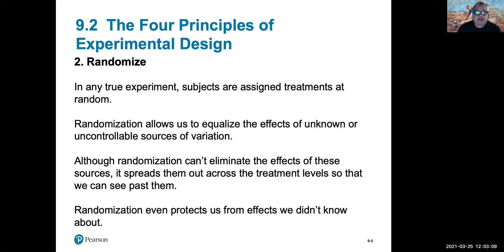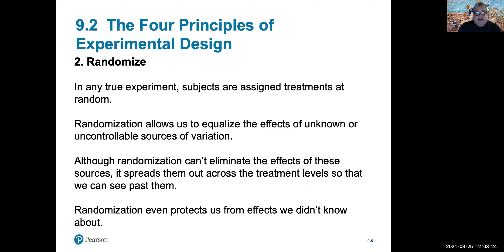The second aspect of design is that experimental subjects have to be assigned to different treatments — different exposures to different variable values and stimuli — in a random fashion, so we cannot be blamed for built-in bias by pre-selecting who is exposed to what treatment.